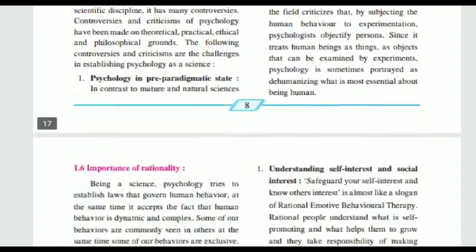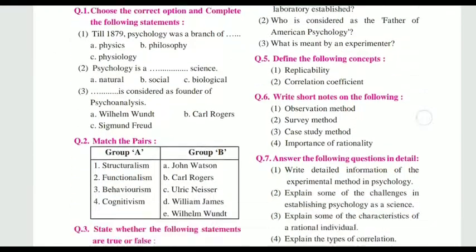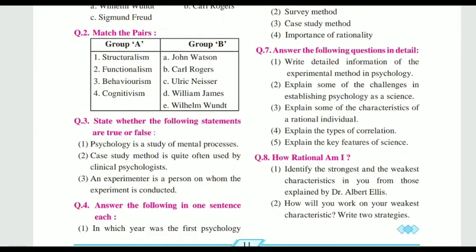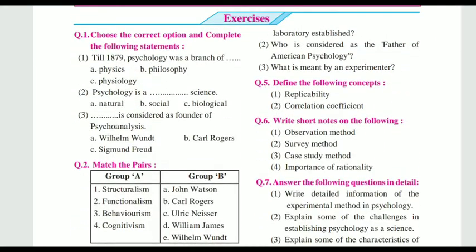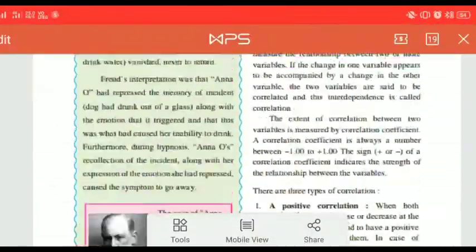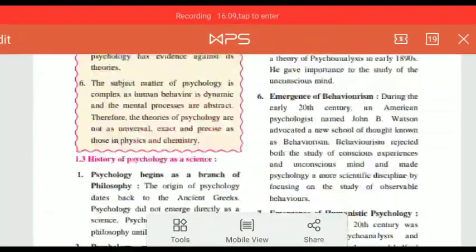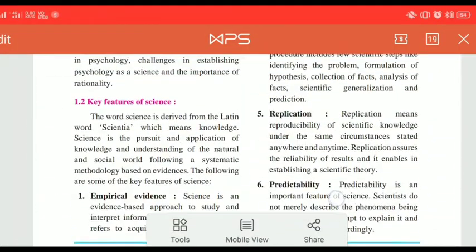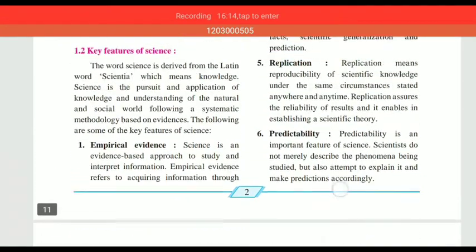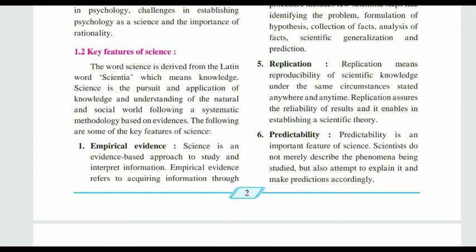Then we move on to the last part: explain the key features of science. That is on page number 2. There are six key features given. You can start with where the word science came from, or with a definition, and then explain all six points.